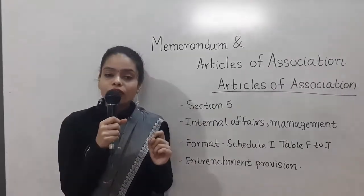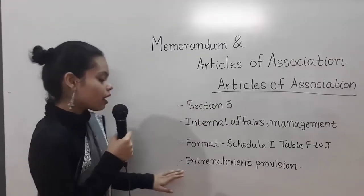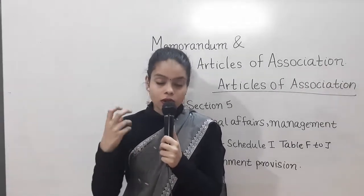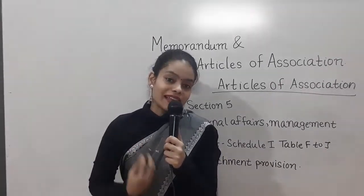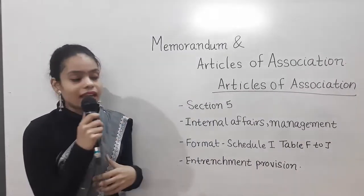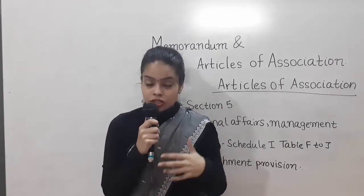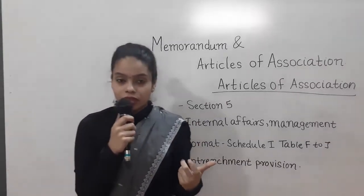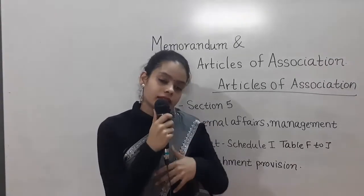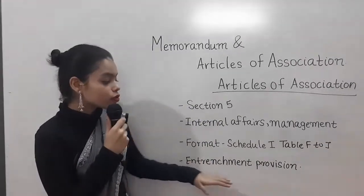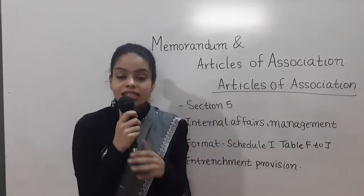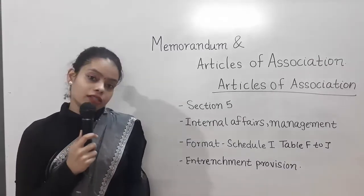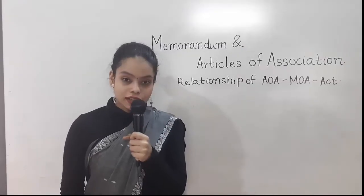Section 5 also tells us about an interesting provision of entrenchment in articles of association. If there is some provision in articles of association which talks about very crucial business matters and that provision has to be changed, then very strict rules and procedures can be adopted by the company — even stricter than having a special resolution, that is 75% or more of the members approving it. It could even require the consent of all the members. So articles of association can have a provision requiring a stricter procedure to alter things crucial to business. This is called the entrenchment provision.